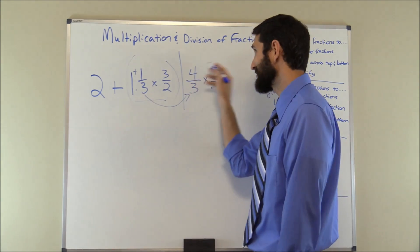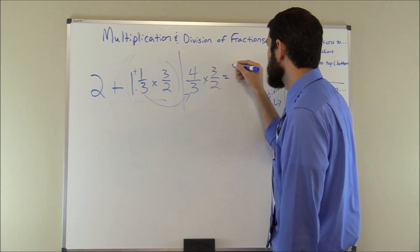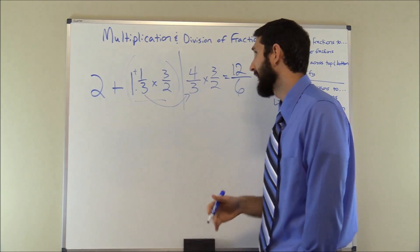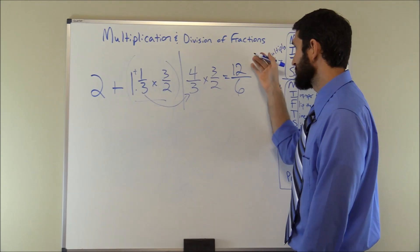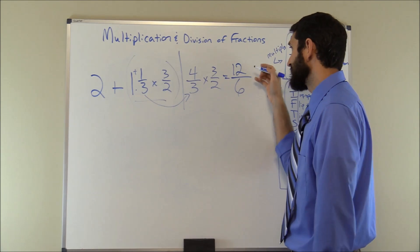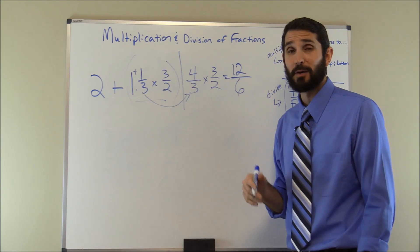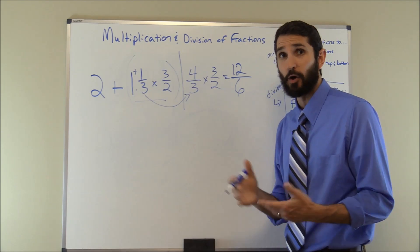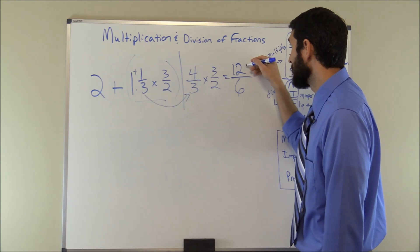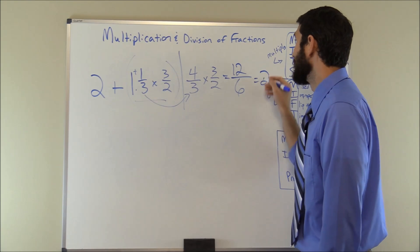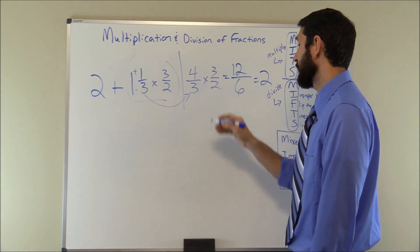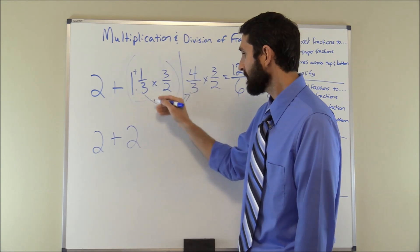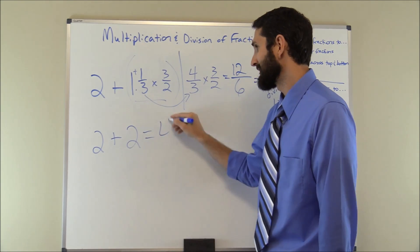Now we times across the top and bottom: four times three is twelve, and three times two is six. The final step is to simplify. Twelve divided by six gives us two, so one and one third times three over two equals two. We come back to the original problem and say two plus two, which equals four. Our final answer is four.